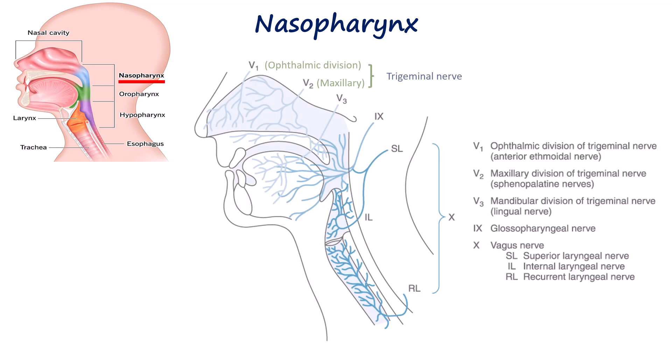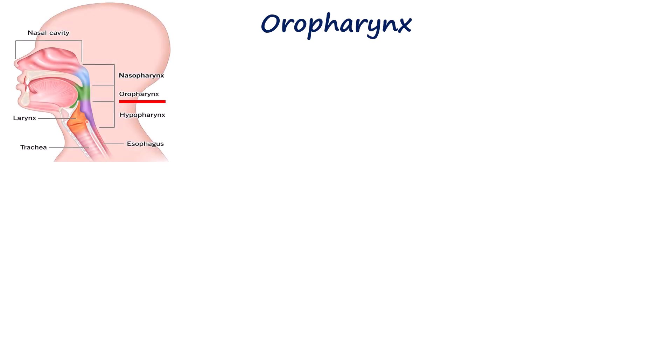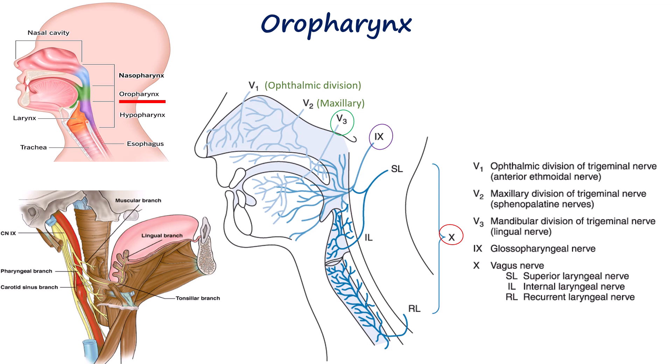The sensory innervation of the nasopharynx comes from both the maxillary division of the trigeminal nerve and the glossopharyngeal nerve. The second division of the trigeminal nerve provides sensory innervation to the anterior and superior parts of the nasopharynx, while the glossopharyngeal nerve provides sensory supply to the posterior and inferior aspects. The oropharynx is innervated by branches of the vagus, trigeminal, and glossopharyngeal nerves. The posterior third of the tongue, the uvula, and anterior surface of the epiglottis are innervated by the tonsillar nerve, which is a branch of the glossopharyngeal nerve.